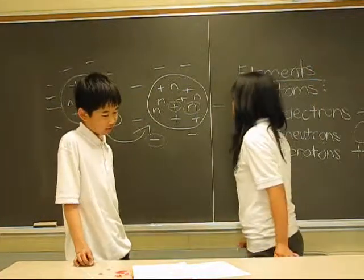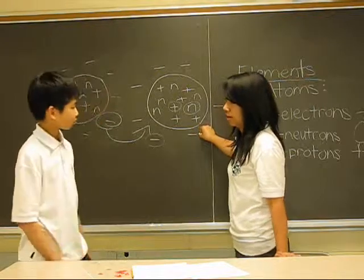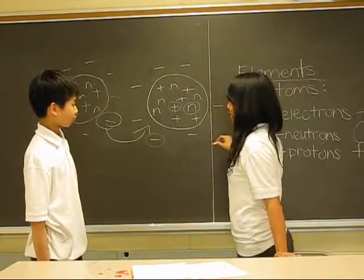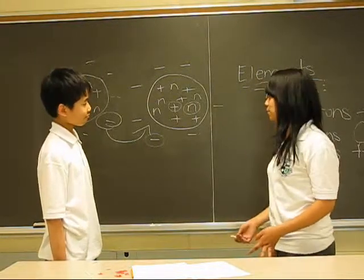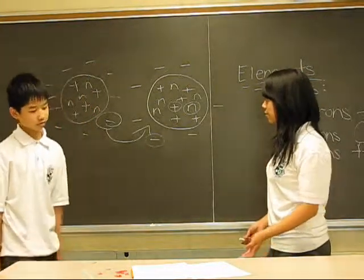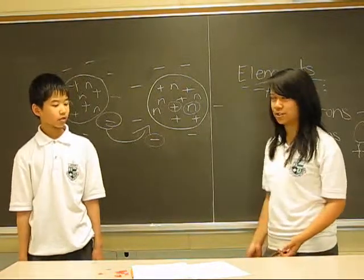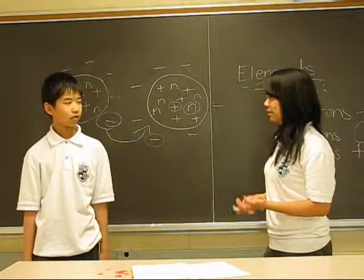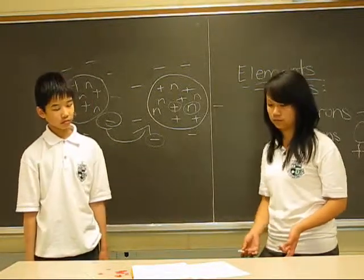If an object has more negatively charged particles than the other object, that makes the object negatively charged. And if it has more positive, like protons, it's positively charged. And if the count of protons and electrons are equal, then the object is neutral.